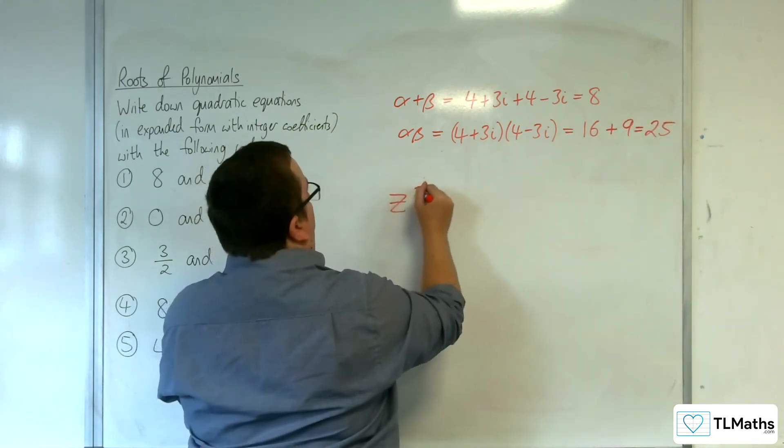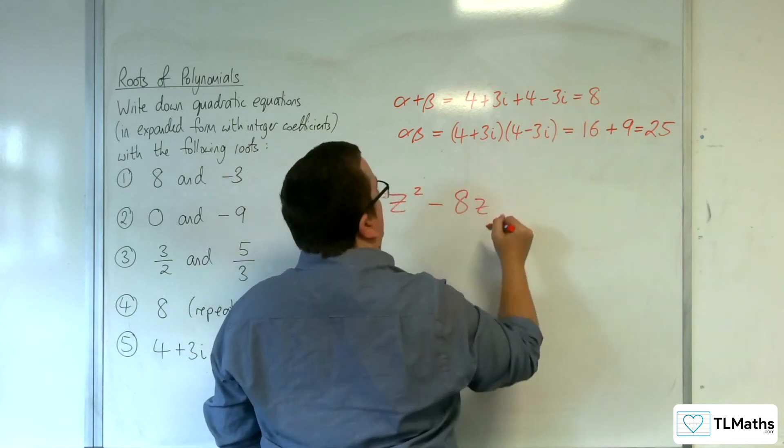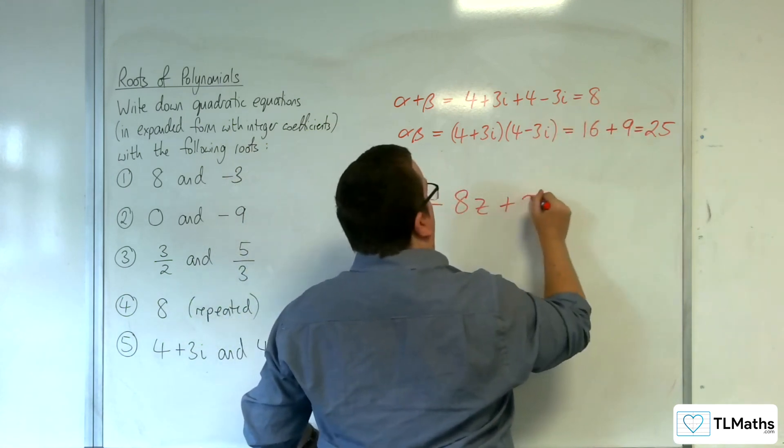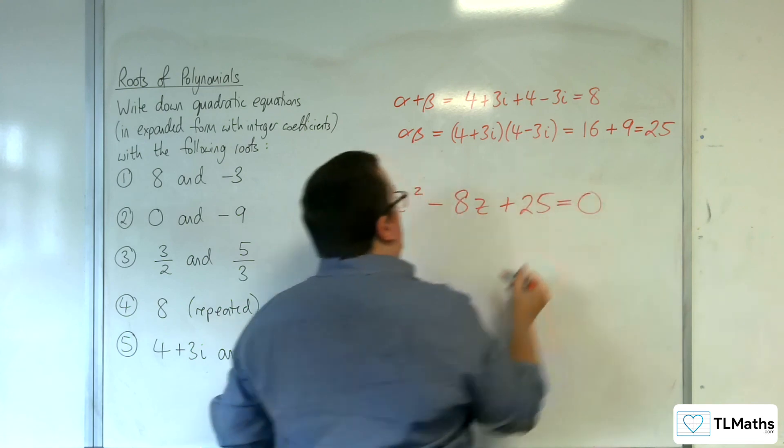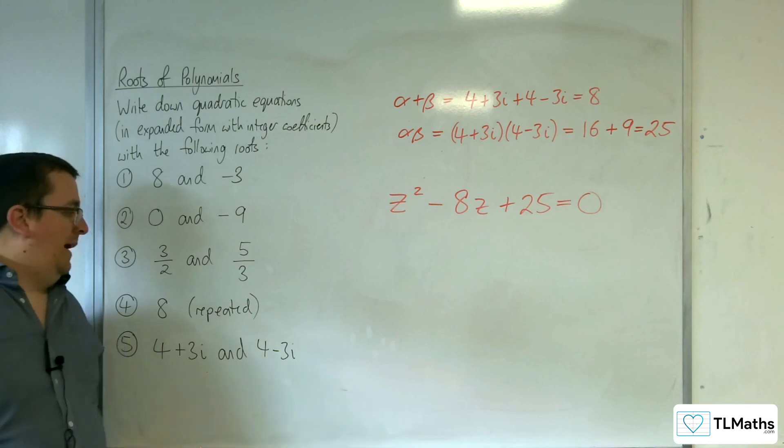So z squared, take away alpha plus beta z, plus alpha beta equals 0. And there's the quadratic equation that will have those as its roots.